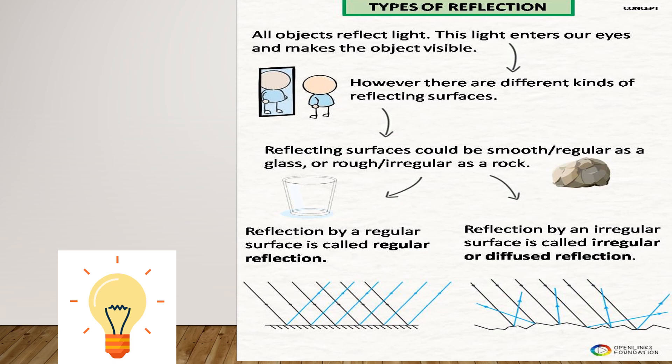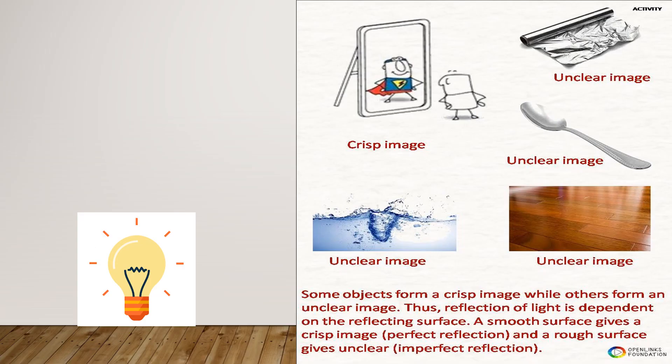For an uneven opaque surface — like a mirror or water with an uneven surface — we are not going to get a clear picture. Observe these objects: a mirror, a crumpled aluminium foil, water that is not stagnant, and a wooden surface that is also uneven. Among these, the mirror forms a correct, crisp, regular image. The aluminium foil and the wooden surface form unclear images. Water with disturbance — due to air breeze or insects moving — also forms an unclear image.